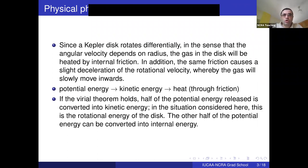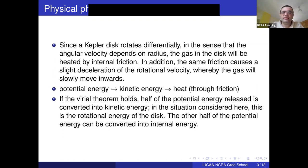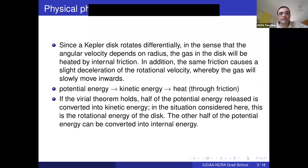If the Virial theorem holds, half of the potential energy released gets converted into kinetic energy, which manifests as the rotational energy of the disk. The other half of the potential energy lost can be converted into an increase in internal energy.